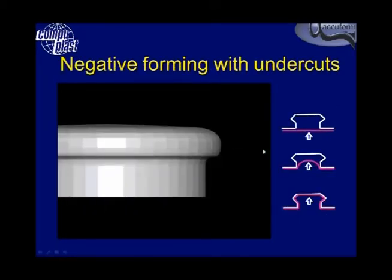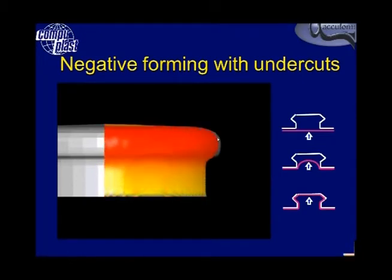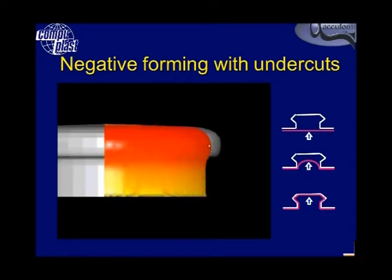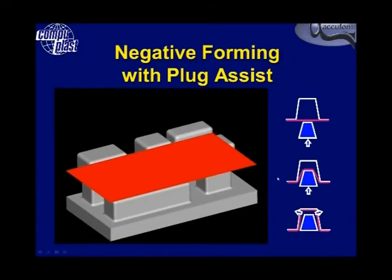T-Sim can also handle negative forming — that is, drawing into a cavity including undercuts. As you can see here, the sheet forms into the cavity and then pulls into the undercut. Of course this is a much more complex tool arrangement, as it will need a special tool setup to remove the part.